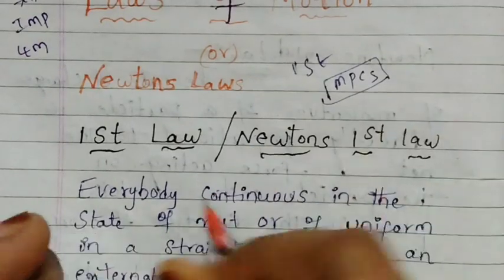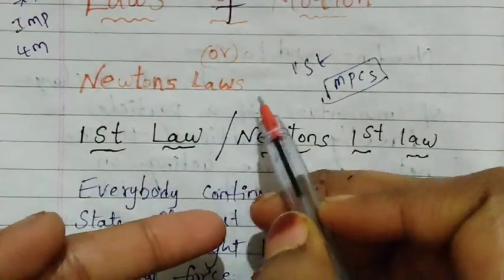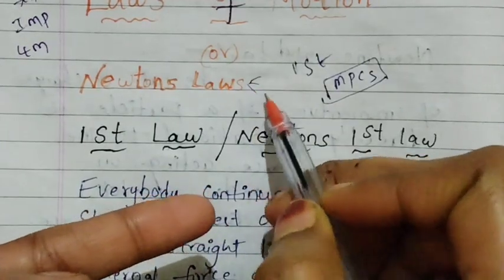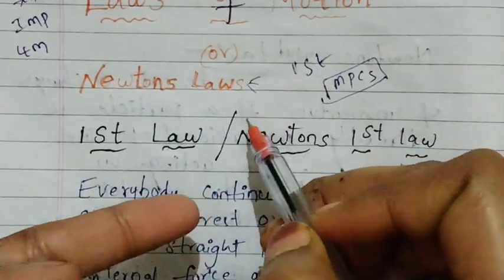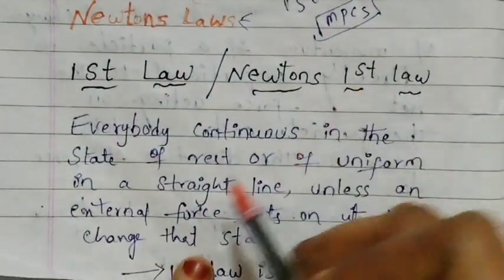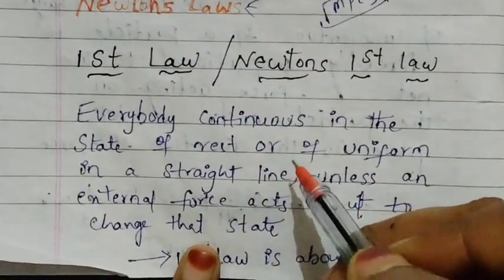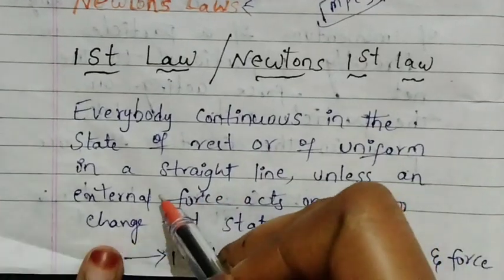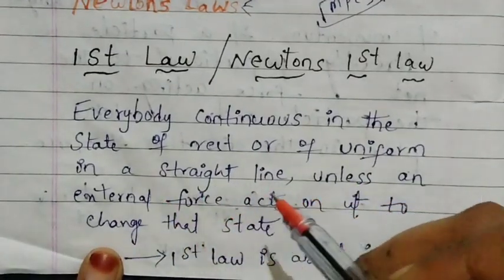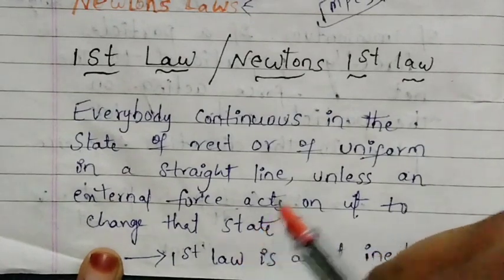We will discuss the first law — this is Newton's first law, also called the law of motion. Newton's first law states: every body continues in the state of rest or of uniform motion in a straight line unless an external force acts on it to change that state.